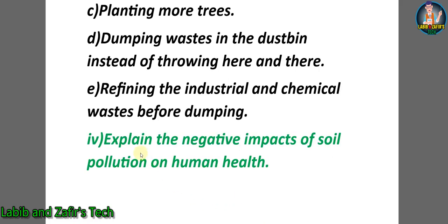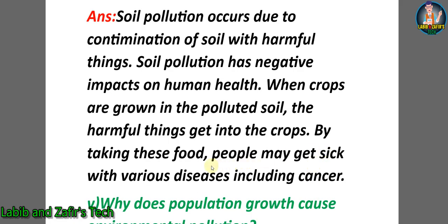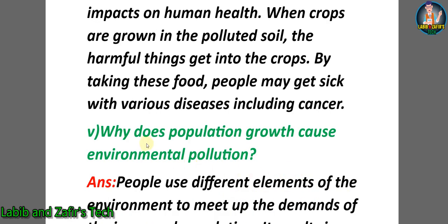Fourth descriptive question: explain the negative impacts of soil pollution on human health. Answer: soil pollution occurs due to contamination of soil with harmful things. Soil pollution has negative impacts on human health — when crops are grown in polluted soil, the harmful substances get into the crops, and by eating this food, people may get sick with various diseases including cancer.